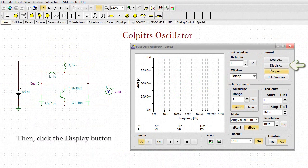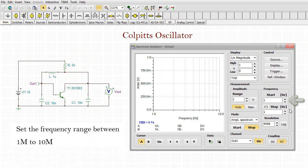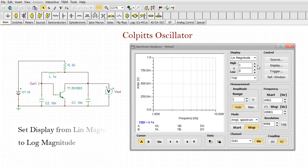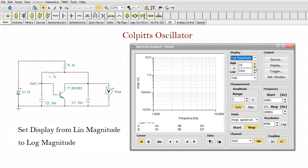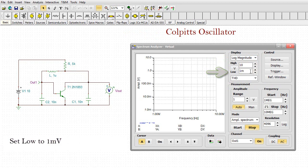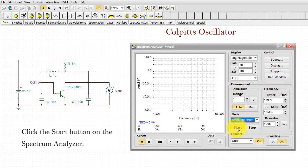Click the Reference button and set Flat Top under Window. Then, click the Display button and change Hide Distortion to THD. Set the frequency range between 1 MHz to 10 MHz. Set Display from Lin Magnitude to Log Magnitude. Set Low to 1 mV.